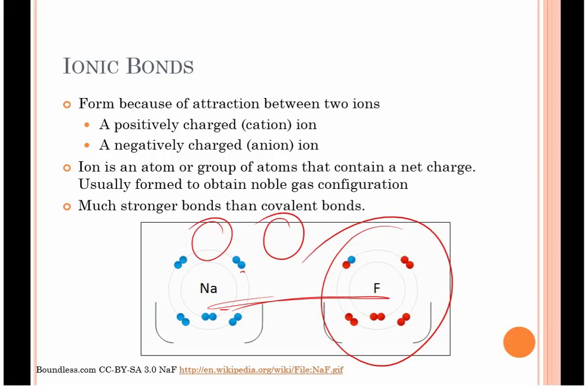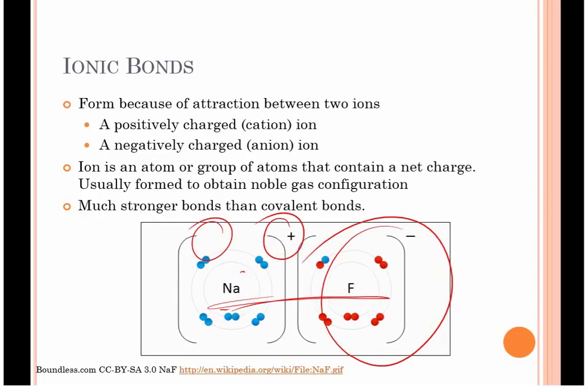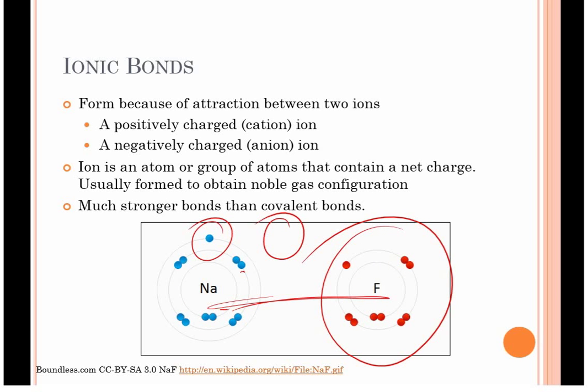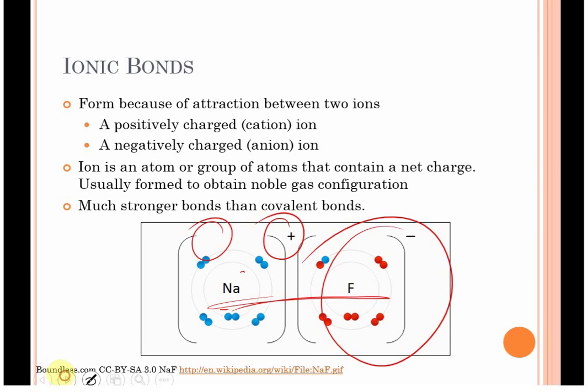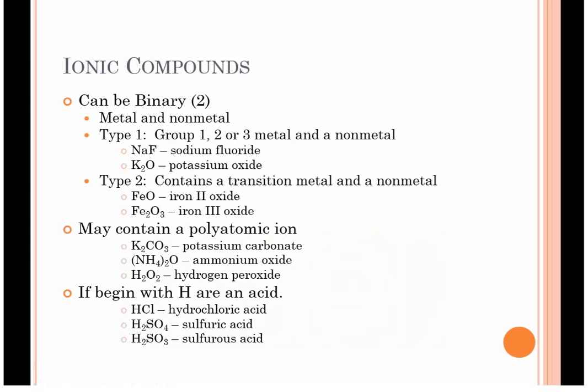Ionic bonds are much stronger than covalent bonds. And because of that, they have higher melting and boiling points. They're also going to be much more soluble in water and other polar substances because of those ionic interactions. Now, covalent compounds are between two non-metals.